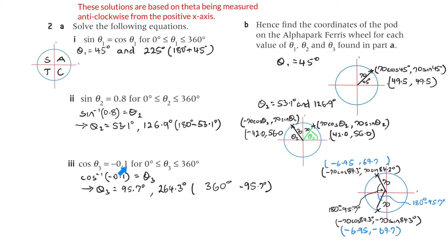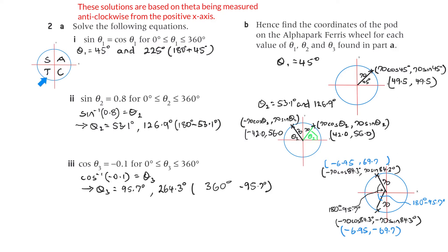Number 3: cosine theta equals minus 0.1. It's negative — cosine is negative in the second and third quadrants. So if we do cosine to the minus 1 of minus 0.1, we get 95.7 degrees. That's this angle there, measured anti-clockwise. It's going to be up here at 95.7 degrees. Now the x-axis reflects cosine, so if you drop straight down, that's the same cosine value. This angle is also 95.7, so it's going to be 360 minus 95.7, which gives us 264.3 degrees.